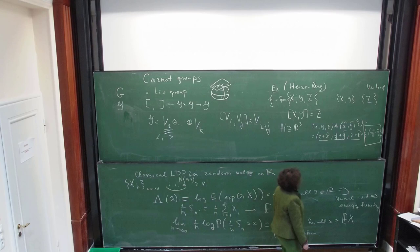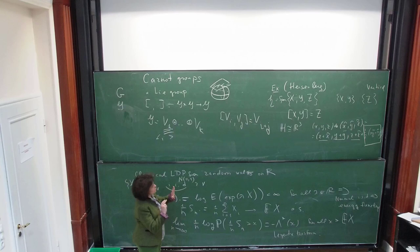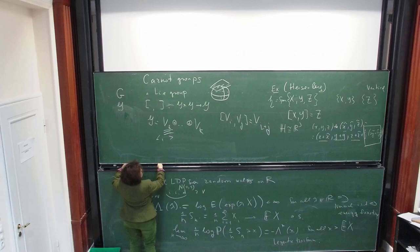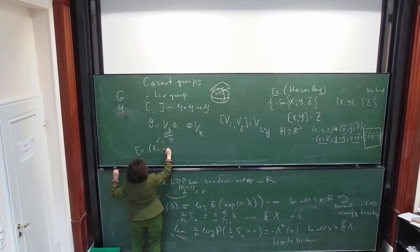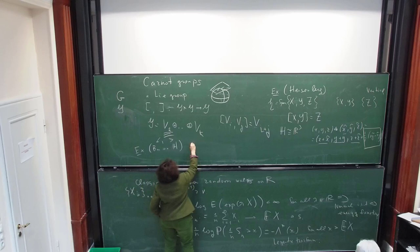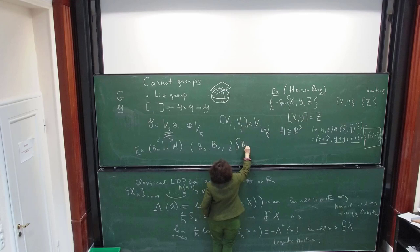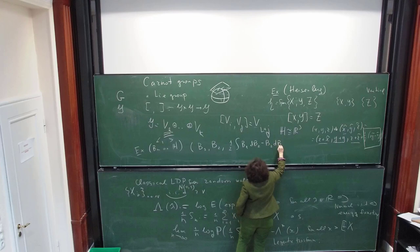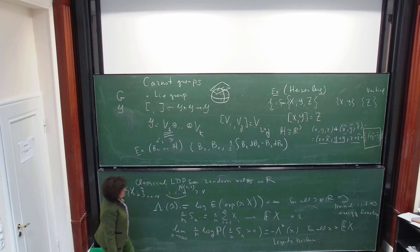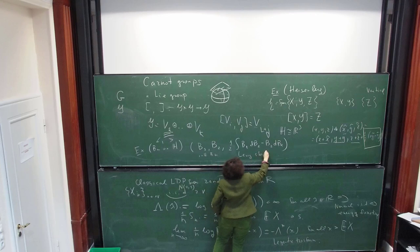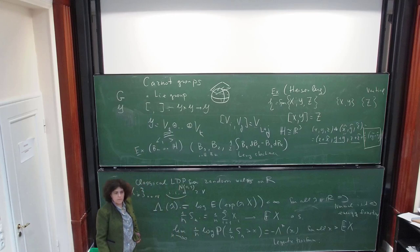Since J is a function on H rather than on the path space, the measures you're looking at are the time-one distributions of the random walk with some scaling — 1/N for the first components but differently for the third. You have to normalize it in a certain way. If you use normally distributed samples in this random walk, you can identify the rate function. If you take normally distributed samples, then...